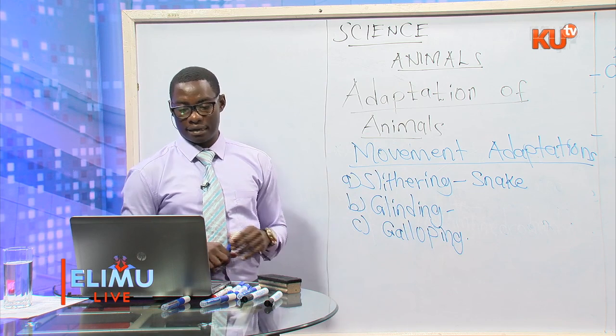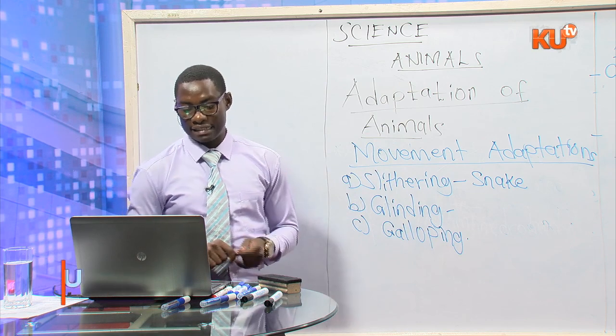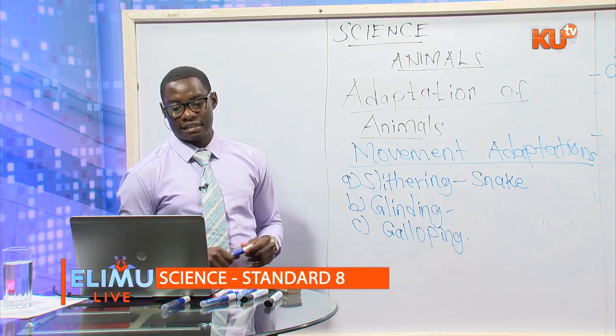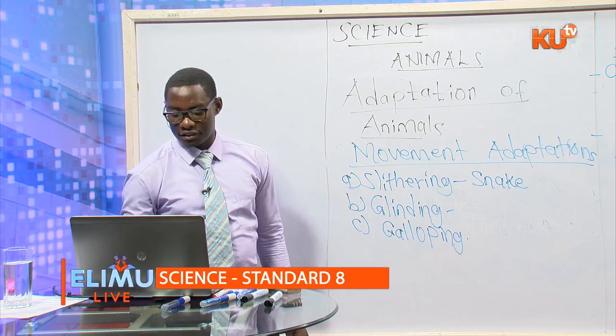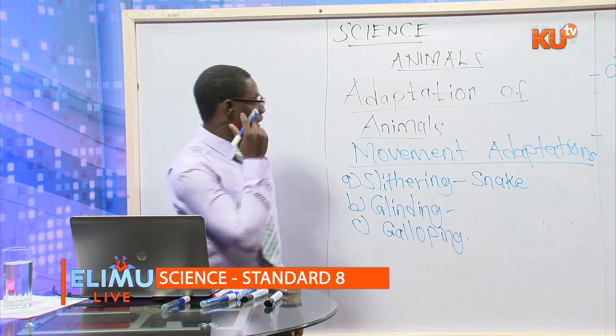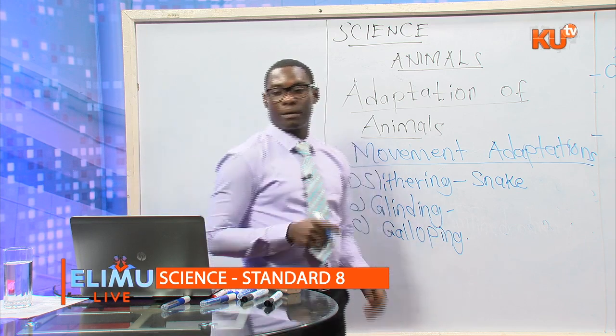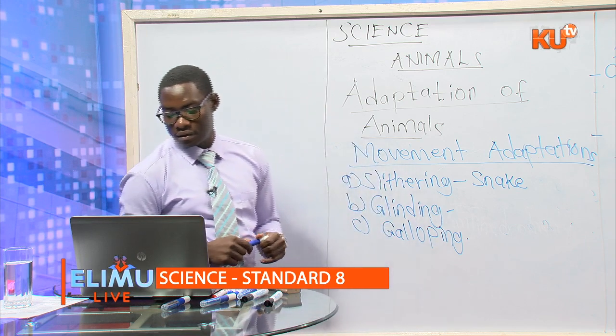When yields reduce from five liters to two liters, that is what we refer to as reduced yields. When such happens, that is an indicator that the animal is sick.